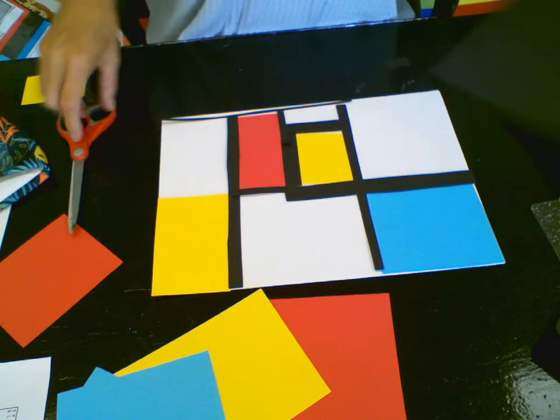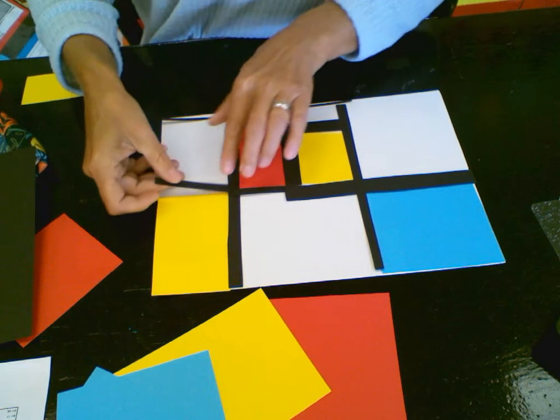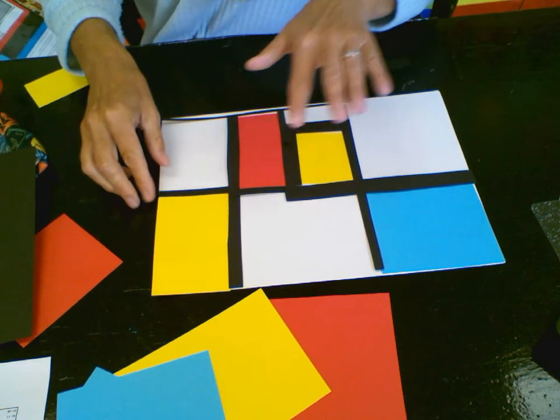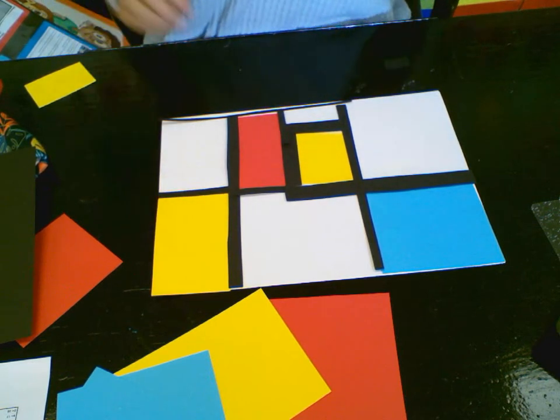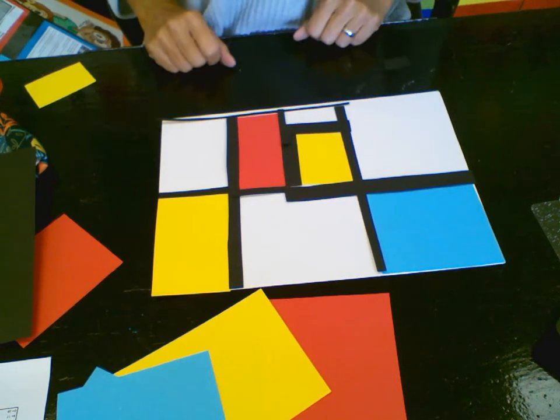So again, famous artist Piet Mondrian, and I'm just using primary colors—red, yellow, and blue—and black strips to create an interesting abstract design.